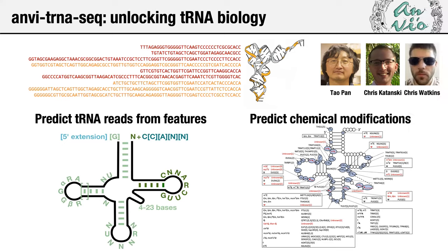I developed a novel dynamic programming algorithm to use the known set of features — the conserved primary and secondary sequence structure of tRNA — in order to predict which sequences are tRNA and which are not. This also yields a feature profile telling you, for example, what the anticodon is of the tRNA. There are 61 different codons and an equivalent number of anticodons. tRNAs are also full of nucleotide modifications — no one knows what most modifications are across the tree of life, but they, along with the pool of different tRNAs decoding different codons, vary on the order of minutes to hours and intimately regulate the cell's response to environmental perturbations.